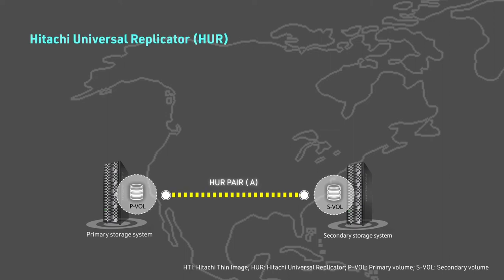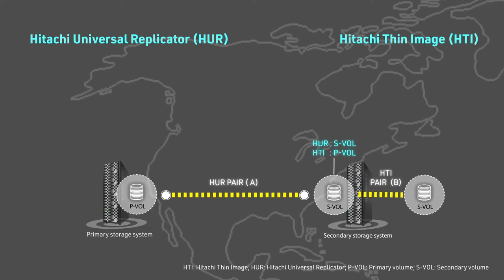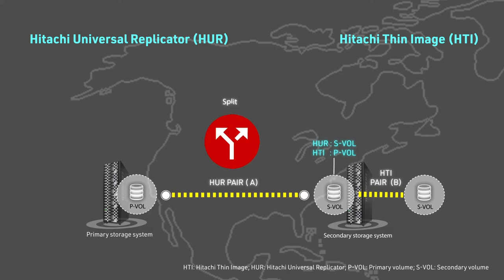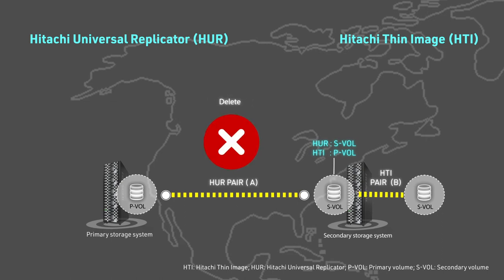Here's how you can manage a Universal Replicator pair in this configuration. You must create the Universal Replicator pair before creating the Thin Image pair. After the Thin Image pair has been created, you can perform any pair operation — including Split, Resynchronize, and Delete — on the Universal Replicator pair.